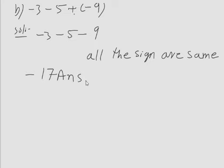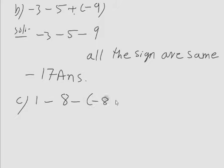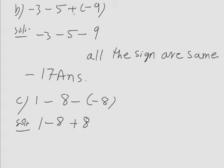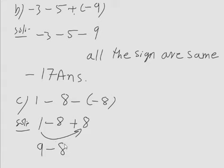Now look at option C: 1 minus 8 minus into minus. Write 1 on its own place, minus 8 on its own place, and minus times minus gives plus, so plus 8. Apply BODMAS — first add 1 and 8 to get 9, then subtract 8 from 9, giving 1. So the answer is plus 1.